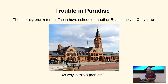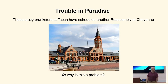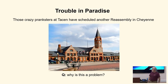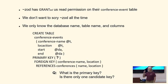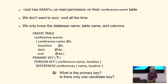Those crazy people at Tassin scheduled another conference in Cheyenne. The problem is we just created this new table of attendees, and now we won't be able to tell who was at which Tassin conference anymore. But fortunately, our friends over at the Zod Galaxy have an implementation where they've granted us read permission on their conference event table, and given us the name of the database, the name of the table, and the name of the columns.